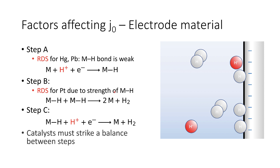For a good catalyst, it has to strike a balance between steps — between the formation of the metal-hydrogen bond and the subsequent breaking of metal-hydrogen bonds. It just so happens that platinum strikes this balance, making it very effective as a catalyst, while for mercury, lead, and so on, the bond is very weak, which means it doesn't favour the formation and surface adsorption of hydrogen.